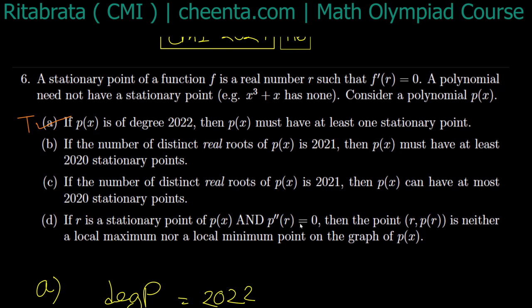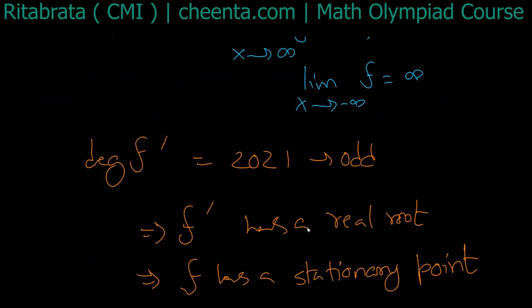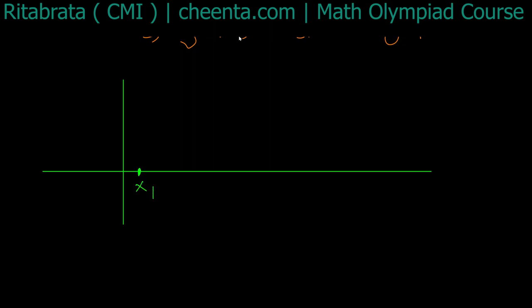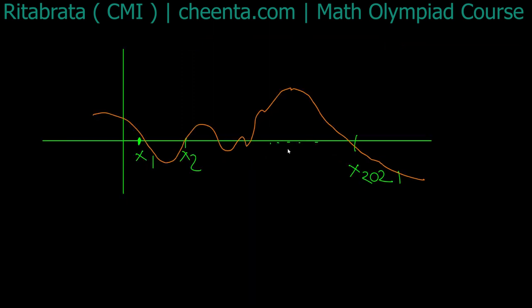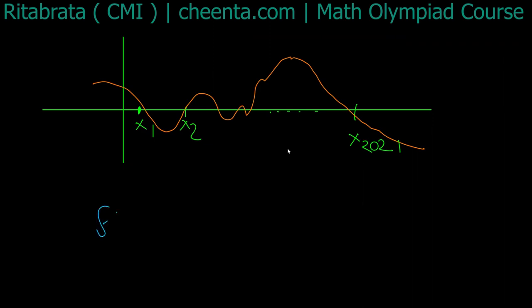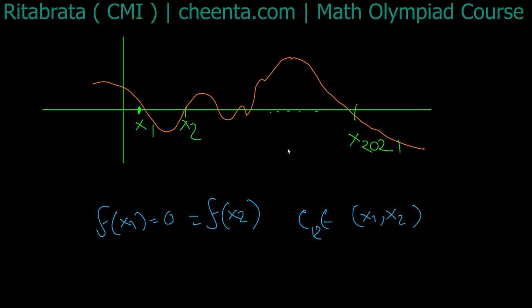The second part: P(x) has 2021 distinct real roots x1, x2, up to x2021. Since f(x1) = 0 = f(x2), we can apply Rolle's theorem — there exists a point c1 between x1 and x2 such that f'(c1) = 0.